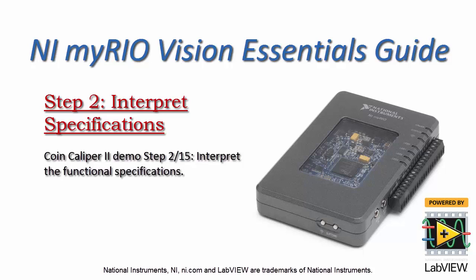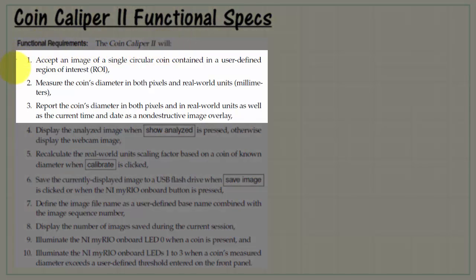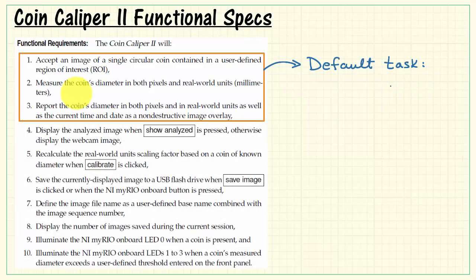Let's begin the design phase by reading through the functional specifications and interpreting them for specific implementation ideas. The Coin Caliper 2 will accept an image of a single circular coin, measure the coin's diameter in both pixels and real-world units, and then report the coin's diameter as a non-destructive image overlay. These first three specifications really form the basis for our default task.